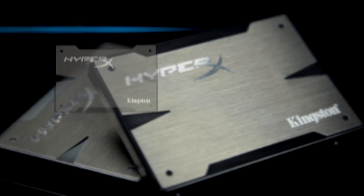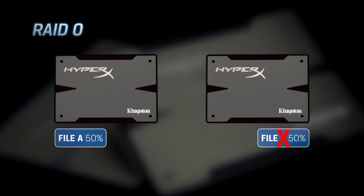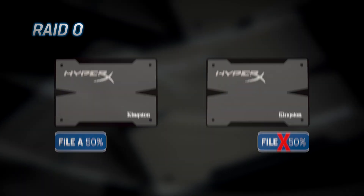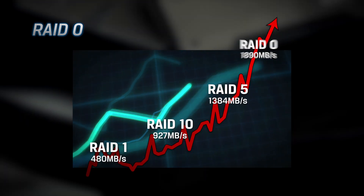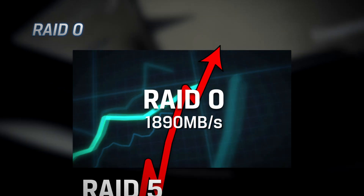The most common RAID levels in use today are RAID 0, 1, 10, and 5. Each provides different benefits to the user. RAID 0 is striping without any redundancy. That means that if a single drive in the RAID group fails, there is a high chance for data loss, but performance is excellent under RAID 0.